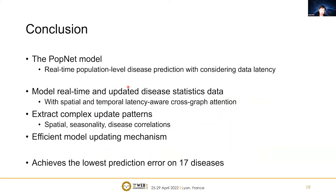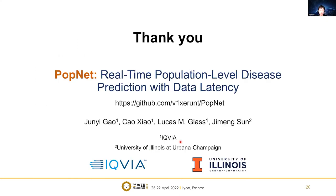In conclusion, we propose the PopNet model — a real-time, population-level disease prediction model that considers data latency. We model real-time and updated disease statistics with spatial and temporal latency-aware cross-graph attention, and extract complex data update patterns including spatial, seasonality, and disease correlation patterns. Our model also supports an efficient model-updating mechanism and achieves the lowest prediction error across 17 diseases. The source code is publicly available on GitHub.